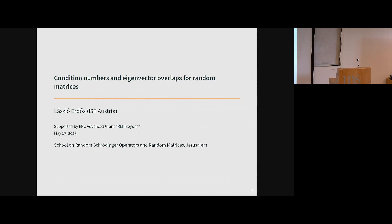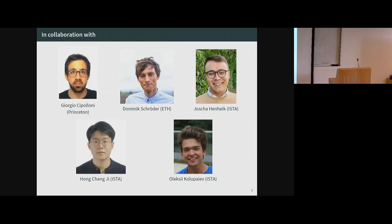I will talk about another aspect of random matrices — about eigenvectors and condition numbers. I will go a bit slow at the beginning, and then technical things will not be covered at the end, because I have many more slides than I could present. These are joint works, several papers presented in joint works with my former students and postdocs.